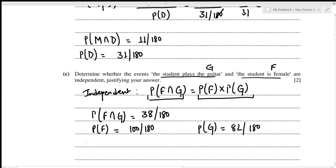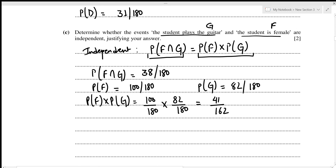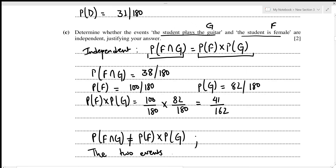We can clearly see that 38/180 is not equal to 41/162, so P(female ∩ guitar) ≠ P(female) × P(guitar). This means the two events are not independent. This concludes the first question.